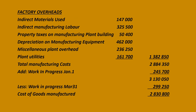We start with the factory overheads and list all of them in this column: the indirect materials, any indirect costs, manufacturing labor, property taxes, rent in manufacturing, plant building depreciation, and manufacturing equipment. These overheads must be for the factory — also miscellaneous plant overhead and plant utilities. We add all of them and put the total of costs. This total is added to the prime costs from the previous slide and we get total manufacturing costs of $2,884,350.